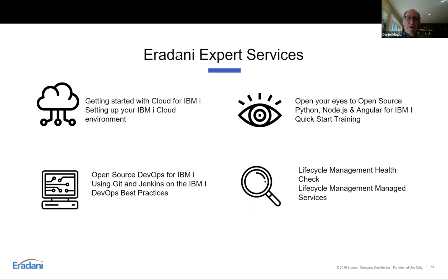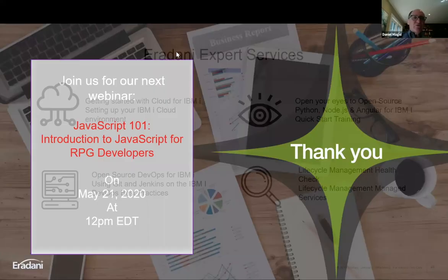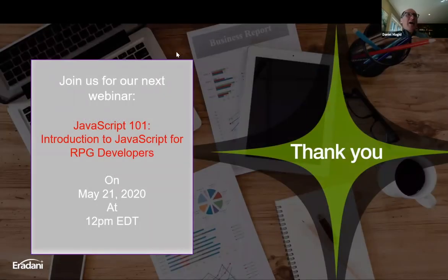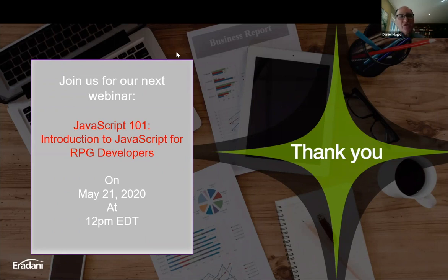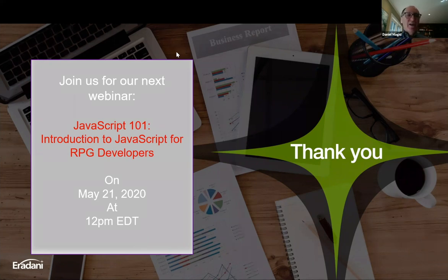If you need any help with any of this technology, the Eridani experts are available — we have IBMi Champions on staff who understand the open source environment and can help you get started. Our next webinar is going to drill into exactly how to use these languages. We're starting with JavaScript — our next webinar on May 21st is JavaScript 101, an introduction to how to write JavaScript applications that talk to the IBMi. If you're interested in getting into that level of detail, you can register. We will be sending out the link in our follow-up along with the presentation slides.